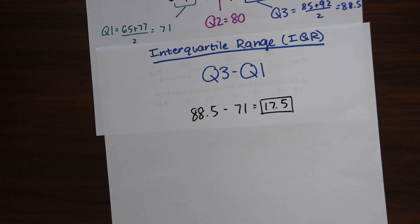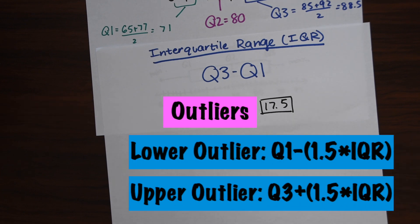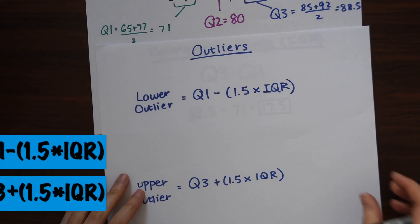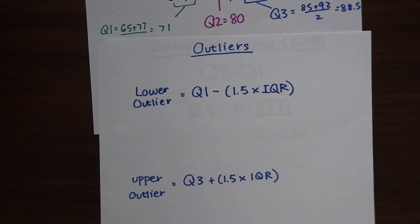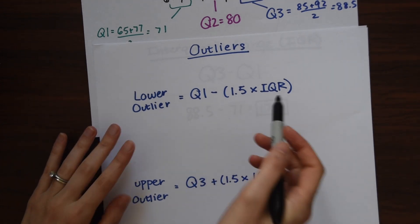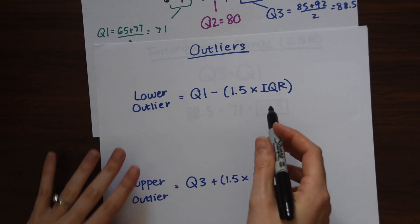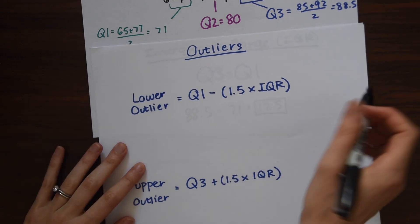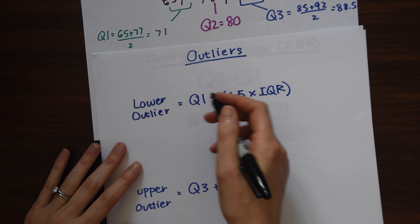So another important thing that we need to analyze are the outliers. So there's an upper outlier and a lower outlier. And we'll look at what each means, but first we're going to find them. So the formula for the lower outlier is quartile 1 minus 1.5 times the IQR, the interquartile range, just the shorthand way of writing that.